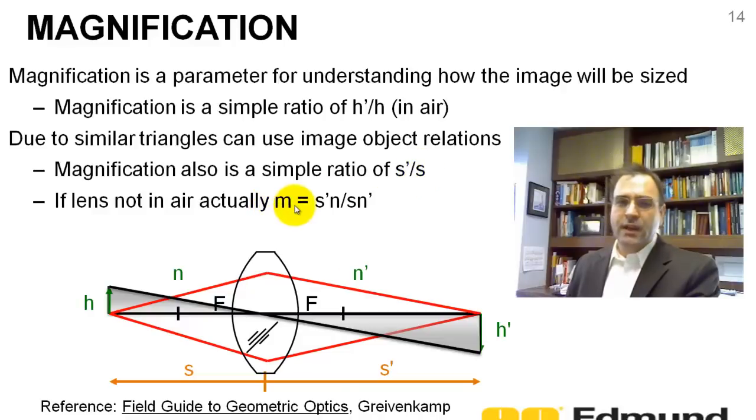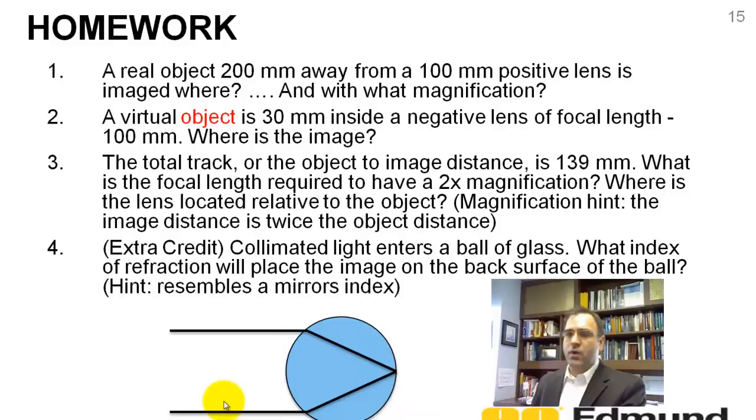If your lens isn't in air, you've got to worry about reduced thicknesses. It's S prime N divided by S N prime. Again, I reference John's book. Great book.